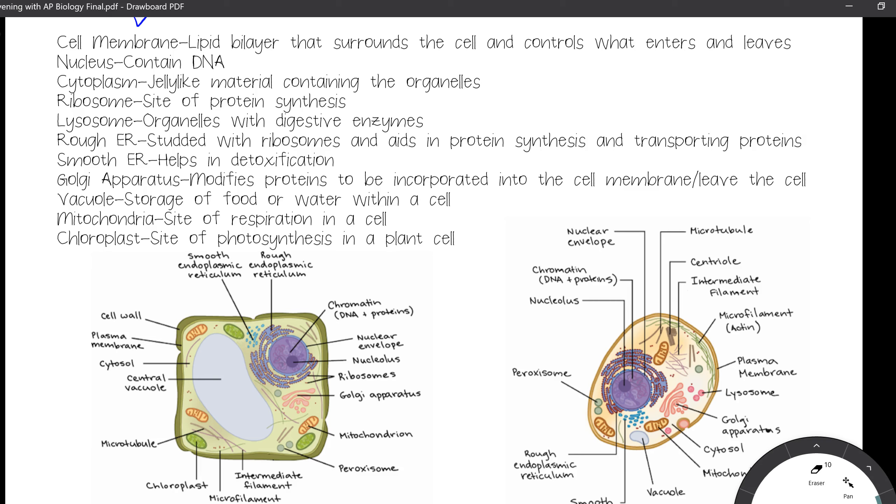Your rough endoplasmic reticulum, we talked about in the last evening, that could be studded with ribosomes. Since it has ribosomes, there will be protein synthesis that will go on and transporting of those proteins in vesicles out. Smooth ER is going to help in detoxification. Now, your liver is a major detoxifying organ, so cells of your liver will have a large amount of smooth ER. Your Golgi apparatus, that's going to modify your proteins, and those proteins that will get modified will either be incorporated into the cell membrane or leave the cell. We talked about that in the endomembrane system.